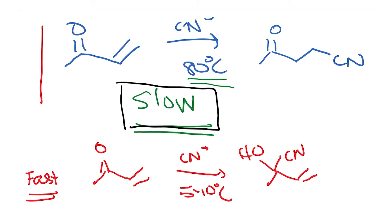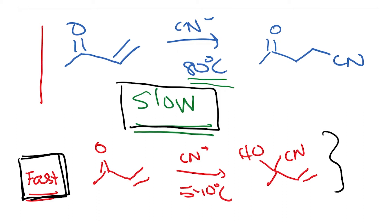The slow and fast distinction is a relative term — the formation of cyanohydrin must be a fast step. Why is the equilibrium important? Because even at 80 degrees centigrade, this fast reaction will be the dominant reaction initially. The reaction will occur at 80 degrees centigrade; the important point is that it is going to be a reversible process.